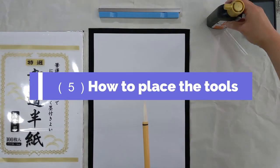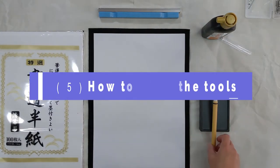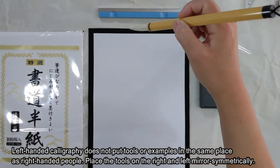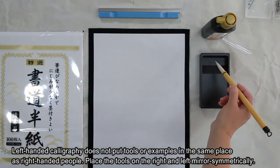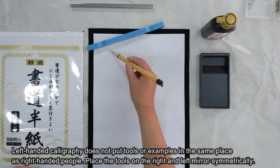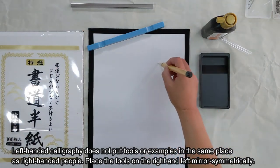Number 5: How to place the tools. Left-handed calligraphy does not put tools or examples in the same place as right-handed people. Place the tools on the right and left mirror symmetrically.